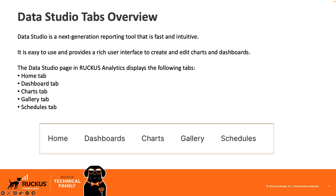Data Studio is a next-generation reporting tool. It replaced Data Explorer if you've been a longtime user of Ruckus Analytics. It's a tool to access all of the data that goes into analytics — anything connected to analytics goes into a massive database, and you can get the data you're looking for by building your own graphs and charts. The Data Studio page displays a home tab, a dashboard tab, a charts tab, a gallery tab, and a schedules tab. We're going to walk through each one to give you an idea of what's in those tabs.